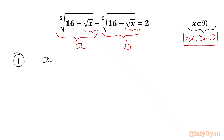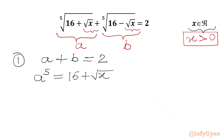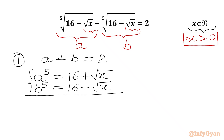So I can write our first equation immediately: a plus b equals 2. Now since the 5th root is a and the 5th root is b, we can write a⁵ equals 16 plus square root of x, and b⁵ equals 16 minus square root of x. Adding both equations gives a⁵ plus b⁵ equals 32, since the square root x terms cancel out. This is equation number 2.